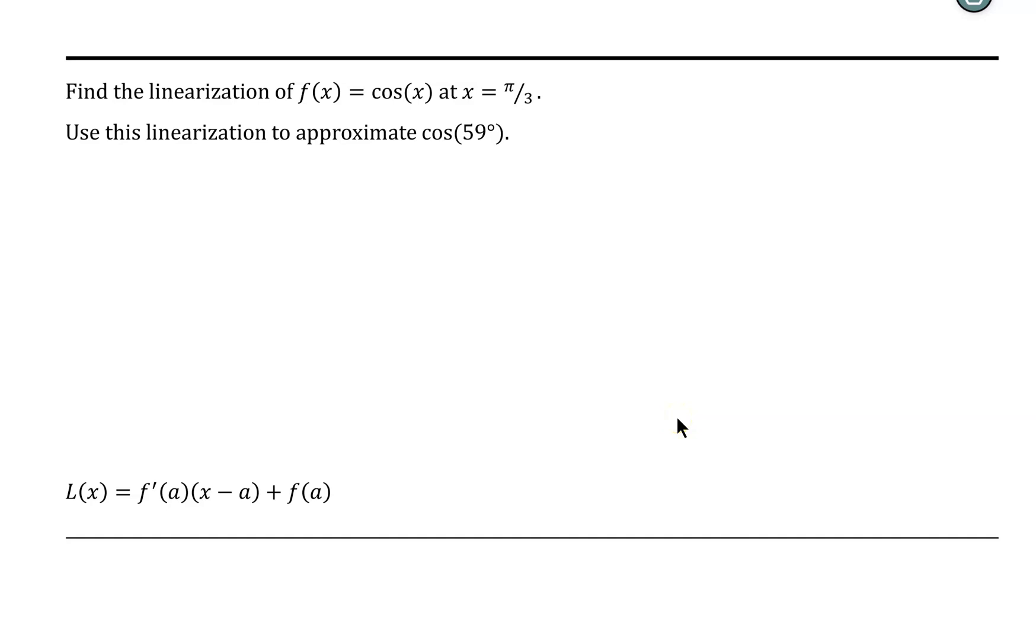Welcome. Let's take a look at an example of finding the linearization of f(x) = cos(x) at x = π/3. Then we'll use this linearization to approximate the cosine of 59 degrees. Note that we have our formula for linearization noted below. So let's go ahead and get started.